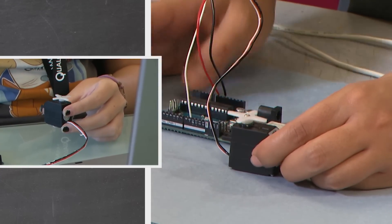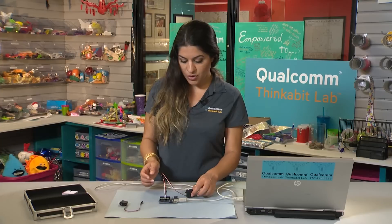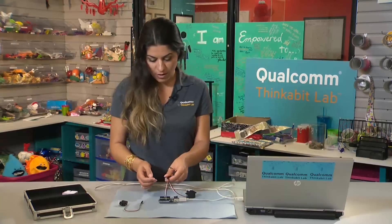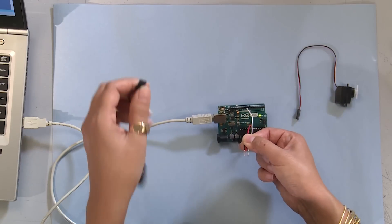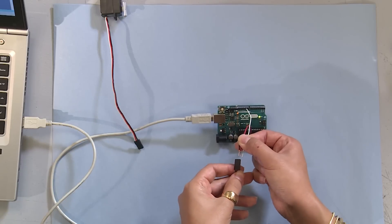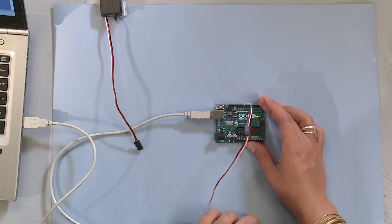The position-based servo will not fully rotate, right? It's position-based. But let's go ahead and try and look at the small servo. Take out the wires, and be careful that they don't touch each other.